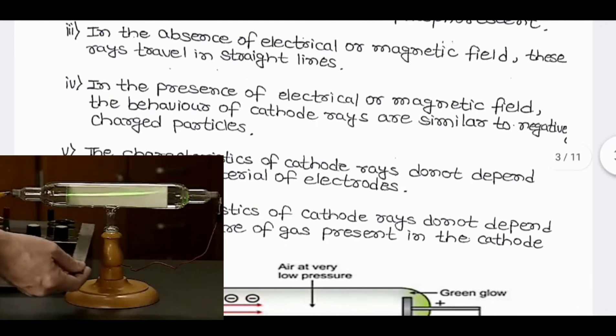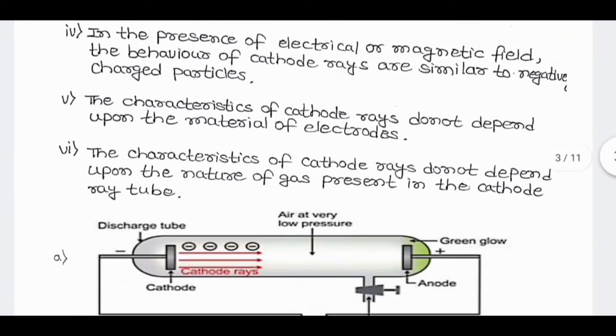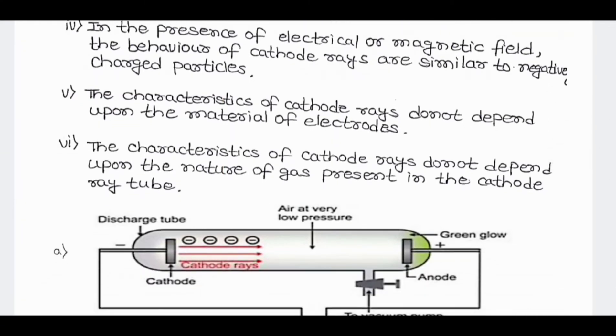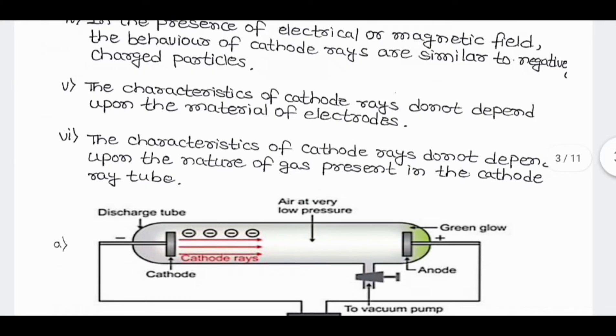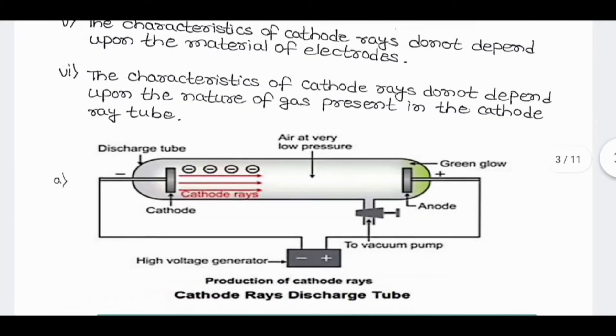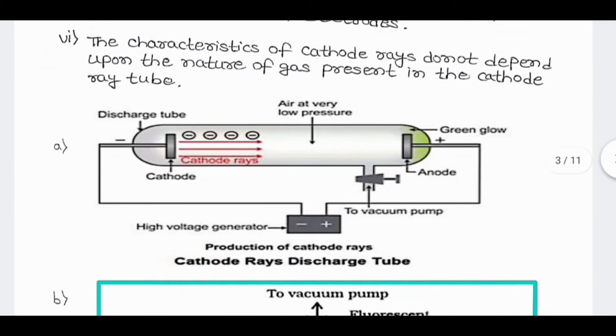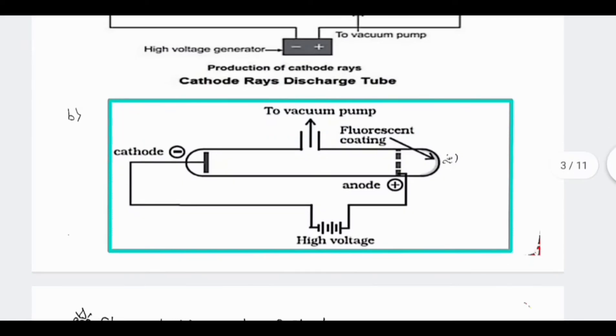In the presence of electrical or magnetic field, the behavior of cathode rays are similar to negatively charged particles. The characteristics of cathode rays do not depend upon the material of electrodes. The characteristics of cathode rays do not depend upon the nature of gas present in the cathode ray tube.